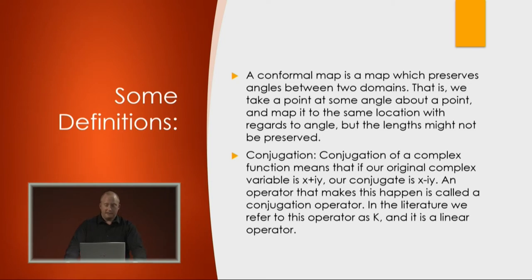Before we begin, we have to establish some definitions. A conformal map is a map which preserves angles, but not necessarily lengths. So if you have a point at some angle in one domain, it will be at the same angle in the domain you're mapping to.